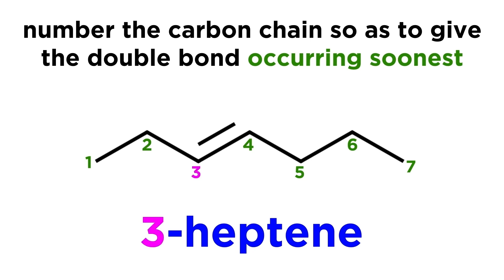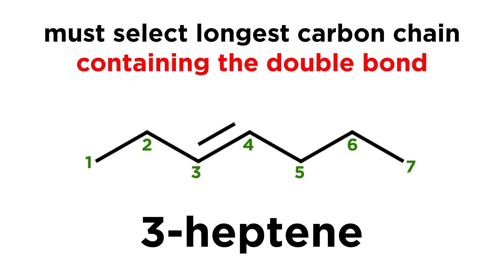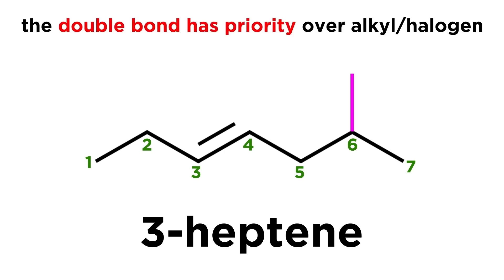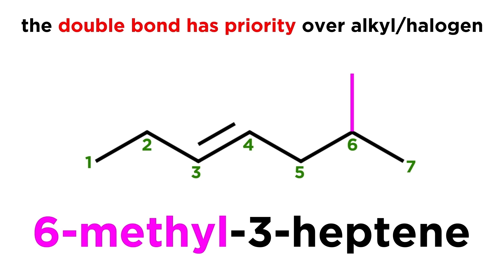The number 3 is reporting the position of the double bond that makes this an alkene. Remember, if there are substituents present, we must select the longest carbon chain possible that contains the double bond. So if there is a longer chain possible but which does not contain the double bond, that will not be the parent chain. There is another important rule in terms of prioritization: the double bond has priority over any alkyl or halogen substituent. We will still number so as to give the double bond occurring soonest, even though numbering the other way gives a methyl group occurring soonest. So this will be 6-methyl-3-heptene.